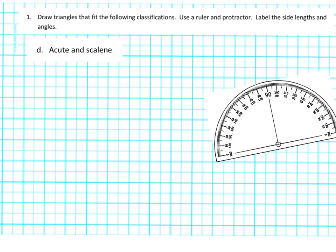In this one, we need to draw an acute triangle that is also scalene. Let's review what this means. Acute means all three angles have to be less than 90 degrees — no right angles and no obtuse angles. And scalene means that all three sides have to be different from one another.